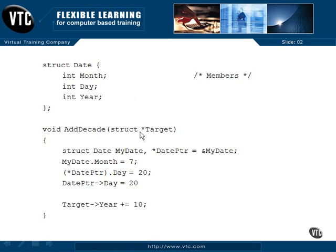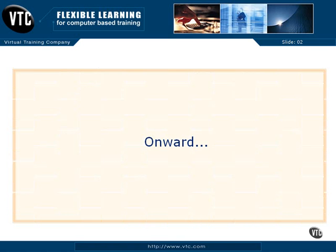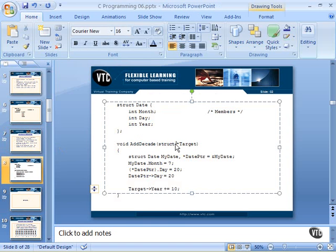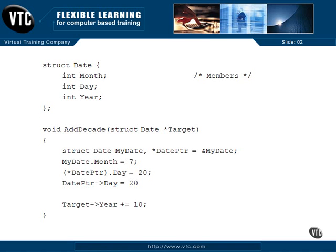There's a typo here — this is wrong and a common mistake. I need to give the tag, so it should be struct date target, not just struct target. Now that's correct. So we have our addDecade, and we're going to send in a pointer — notice the asterisk — it's a pointer to a date structure.